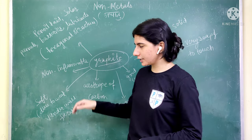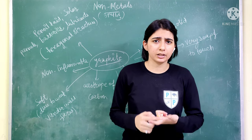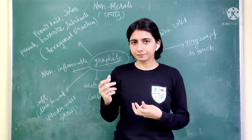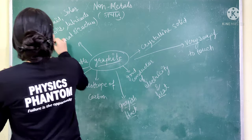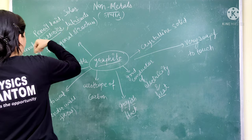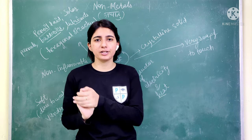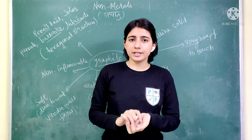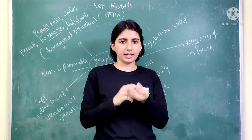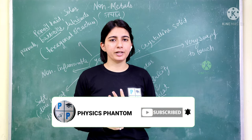The uses of graphite are very important. It is used in pencil leads and solar panels. It is also used in batteries and as a lubricant. Graphite is non-inflammable, meaning it does not catch fire. The structure of graphite is hexagonal — it has six sides.